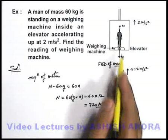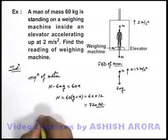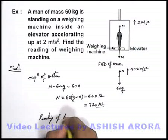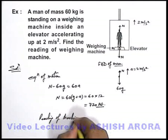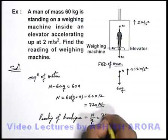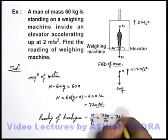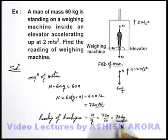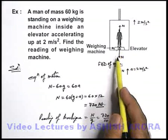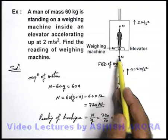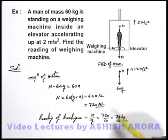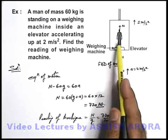This normal reaction of 720 newtons is acting on the weighing machine. The reading of the machine = N/g = 720/10 = 72 kilograms. The weighing machine only measures the normal reaction acting on it, which is 720 newtons, so the reading shown by the machine in this situation is more than the actual weight of the man.